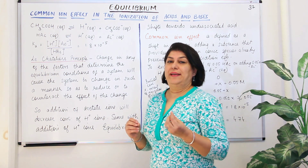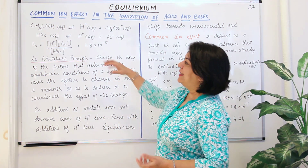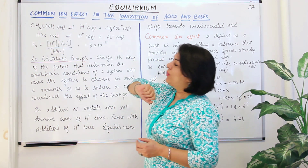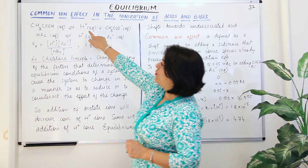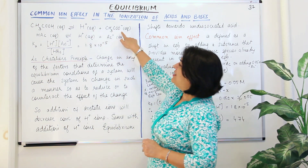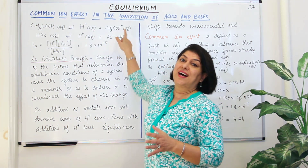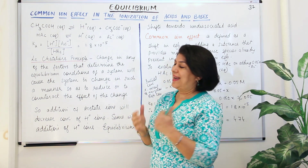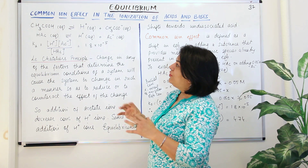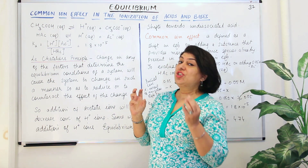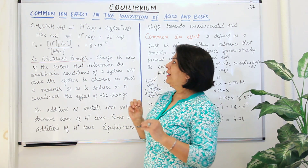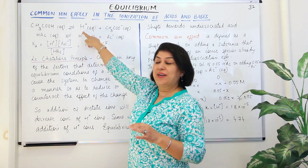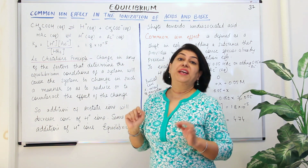What is a common ion? We are talking of equilibrium. Let us take an equilibrium of acetic acid. CH3COOH is acetic acid. When it dissociates, it gives rise to H positive and CH3COO negative, which is the acetate ion. An equilibrium exists because it is a weak acid. So what would a common ion, or the addition of a common ion, mean? You understand that this equilibrium has got two ions: the H positive ion and the CH3COO negative ion.